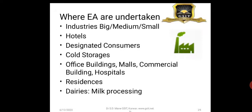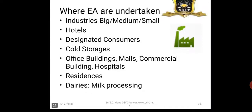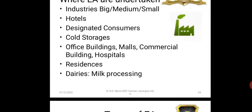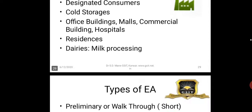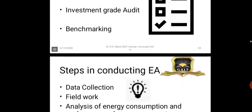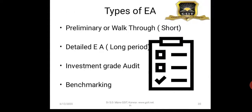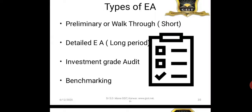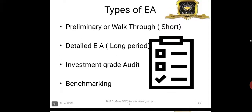The same approach is applied to industry. Energy audits are undertaken for all industries — small, big, medium — as well as hotels. The Government of India has designated consumers for whom mandatory audits are required, including cold storages, office buildings, commercial buildings, hospitals, multi-story residences, and milk processing facilities. There are three types of energy audit: a walkthrough or preliminary audit of two to three days; a detailed energy audit; and an investment grade audit, which requires elaborate financial justification for costly retrofits.